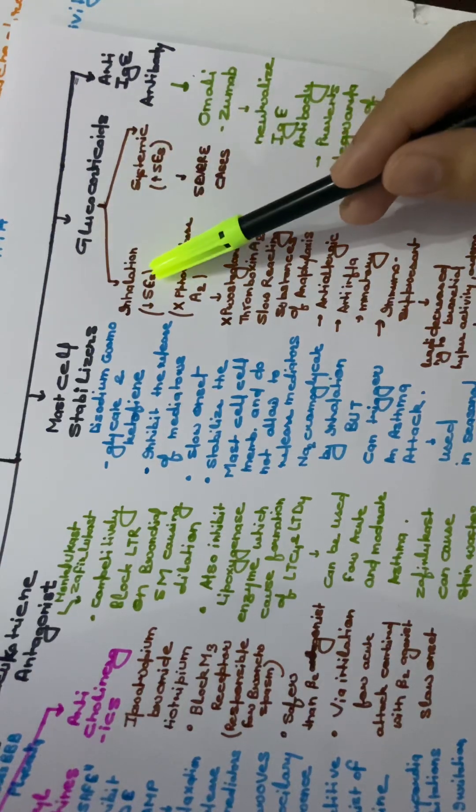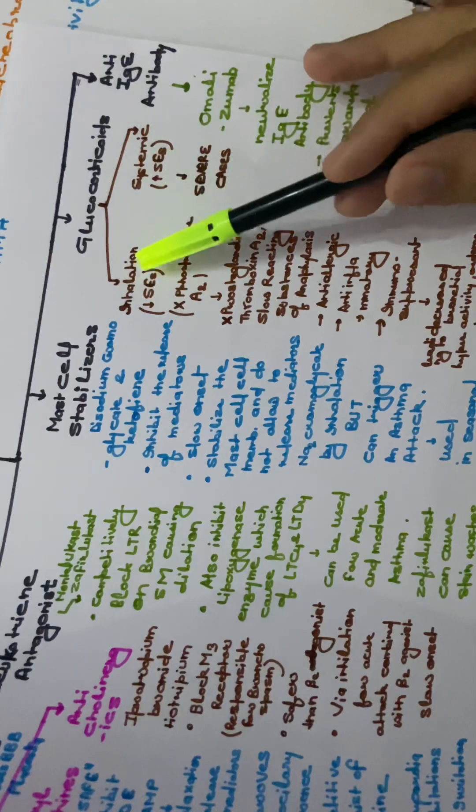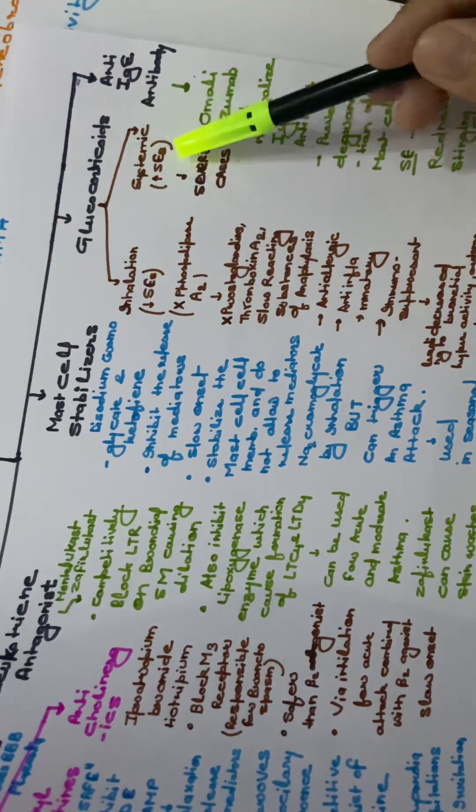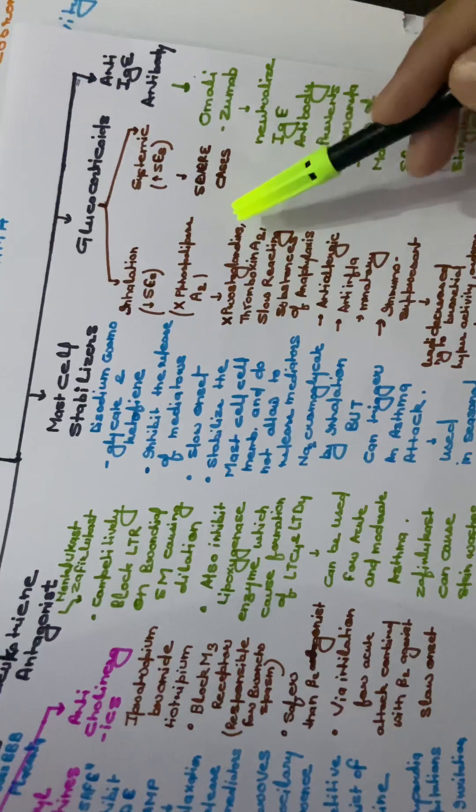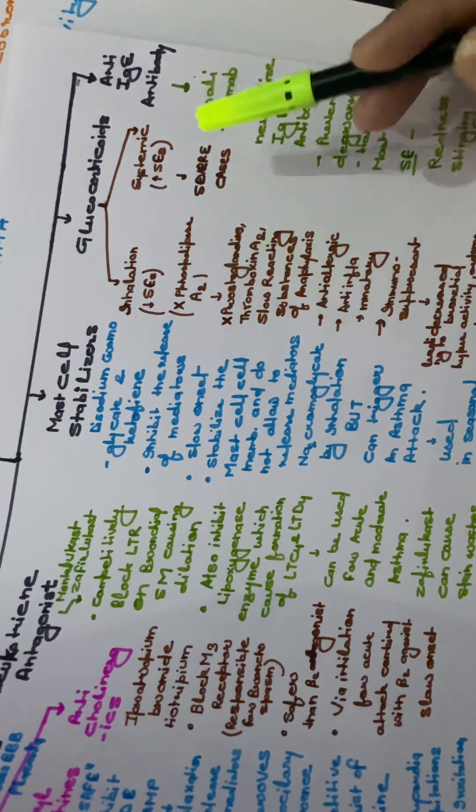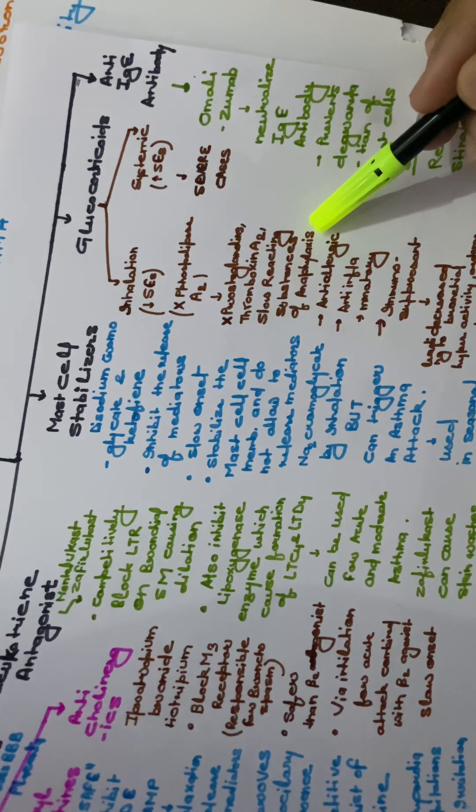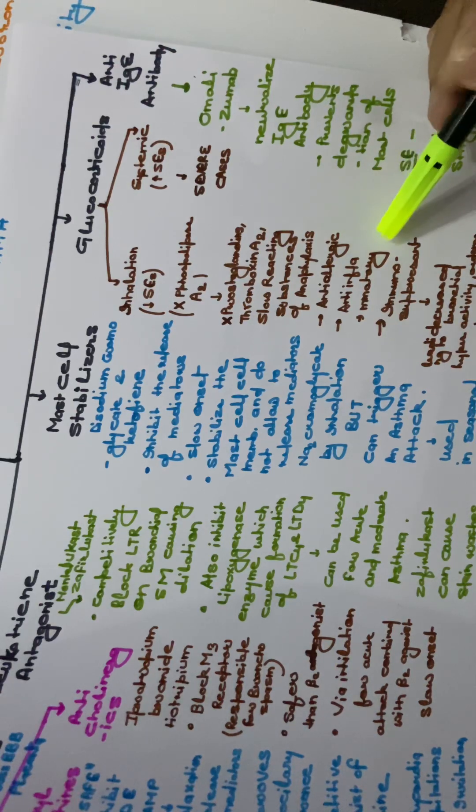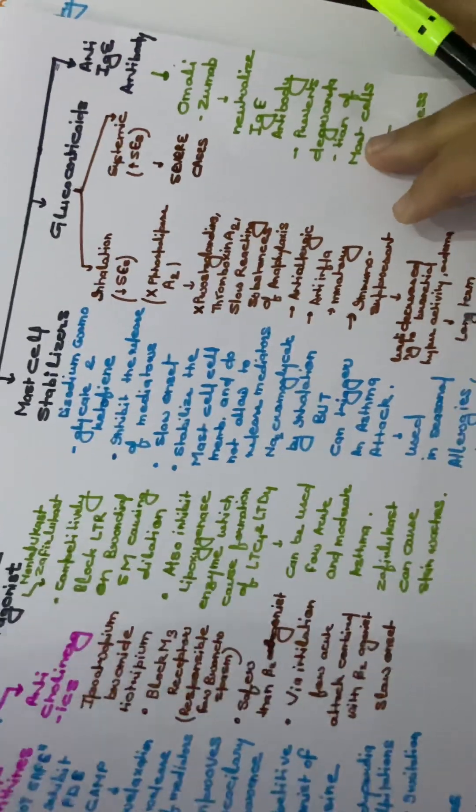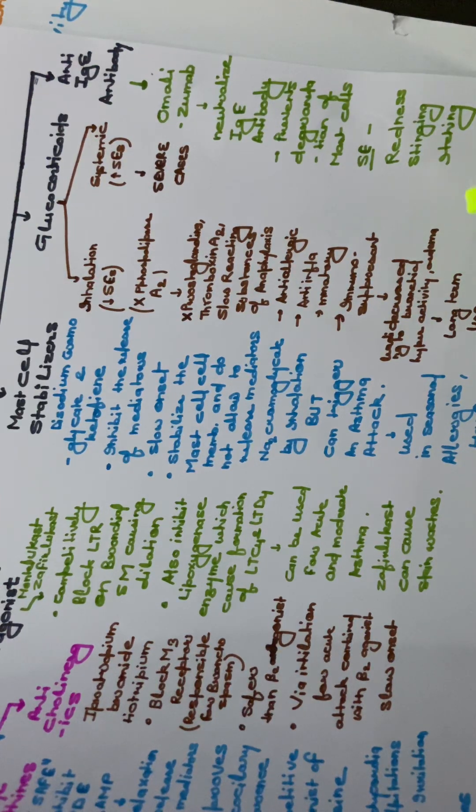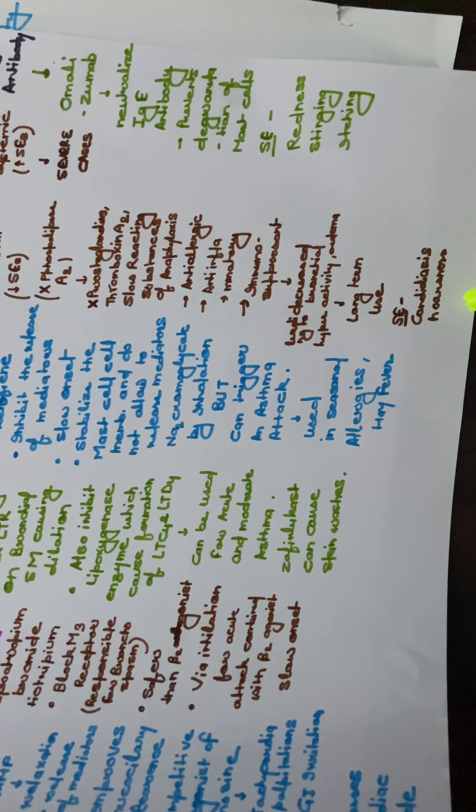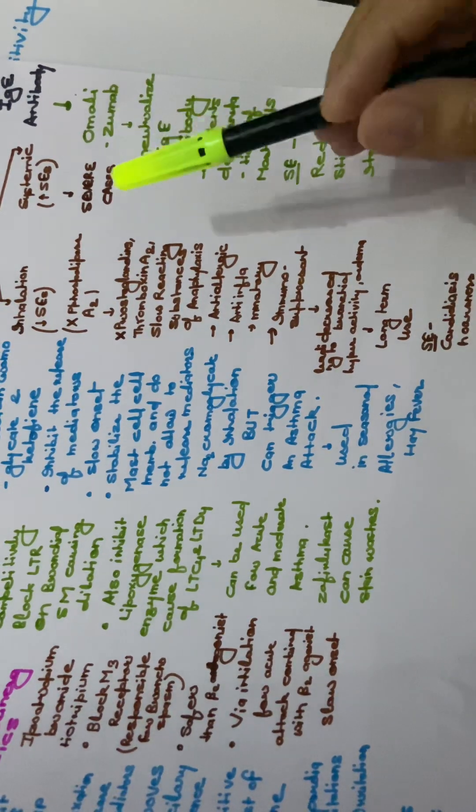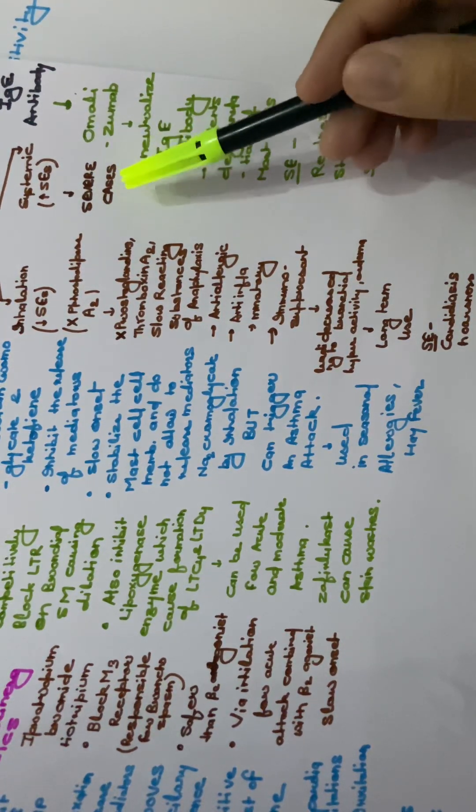Next are the glucocorticoids. They can be of two types: inhalation and systemic. Inhalation decreases side effects and systemic increases side effects. They inhibit phospholipase A2, inhibits prostaglandins, thromboxane A2, slow reacting substances of anaphylaxis. They are anti-allergic, anti-inflammatory, immunosuppressant, leading to decreased bronchial hyperactivity and edema. They can be used for the long-term use and the side effects are candidiasis or hoarseness or hardening of voice, etc. The systemic glucocorticoids can be used only in the severe cases.